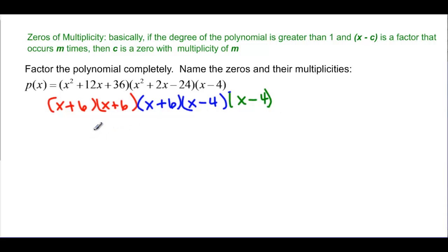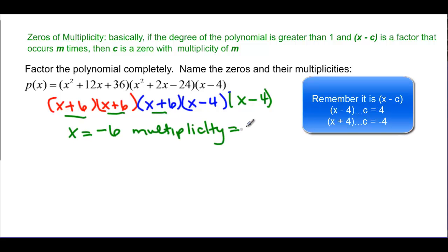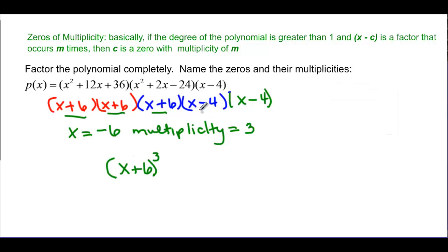And I want to think about this. I have x plus 6. So x is going to be equal to negative 6. And it has a multiplicity of how many of them do I have? 1, 2, 3. So the multiplicity is equal to 3. Or I could write that as x plus 6 cubed. And then I have this x minus 4. So x would be equal to positive 4. And it has a multiplicity equal to 2 of them. Or we could simplify this and say x minus 4 quantity squared.